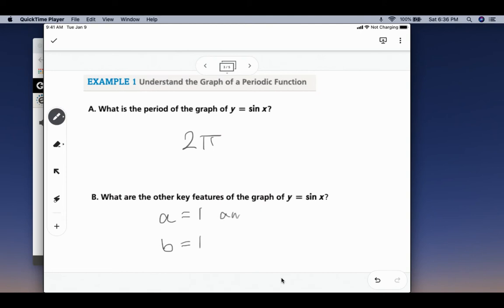So the a value tells us our amplitude is 1, and the period is 2 pi. This is our equation for the parent function of sine.